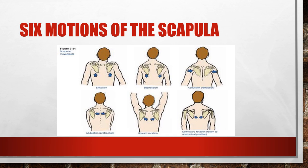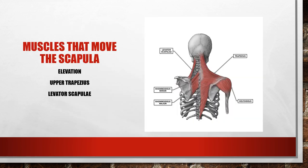The muscles that move the scapula can be grouped into those above and below. Elevation of the scapula is accomplished by the trapezius muscle and the levator scapulae. The levator scapulae — hence its name — lifts the scapula, like a puppeteer pulling from the top. The trapezius has three parts: upper, middle, and lower, each with different innervations and controlling different movements.